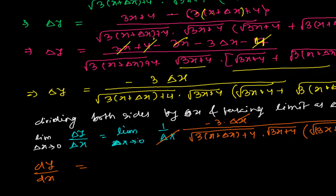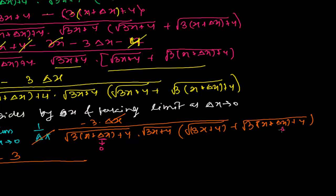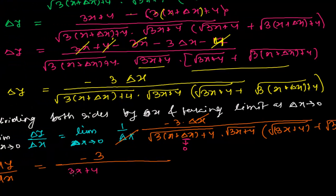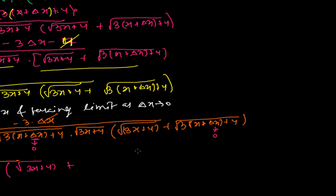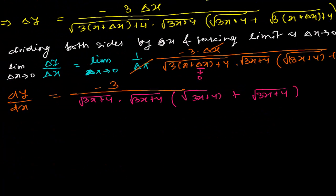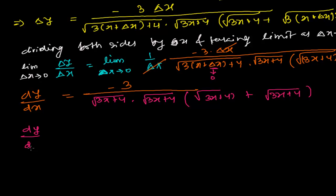The limit δy/δx becomes dy/dx. Plugging in δx = 0: the δx terms go to zero, giving √(3x + 4) in the denominator. So we get dy/dx = −3 divided by √(3x + 4) times (√(3x + 4) + √(3x + 4)).